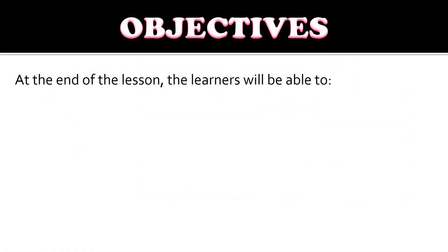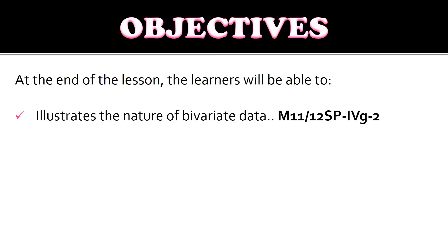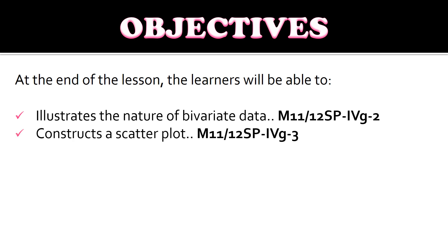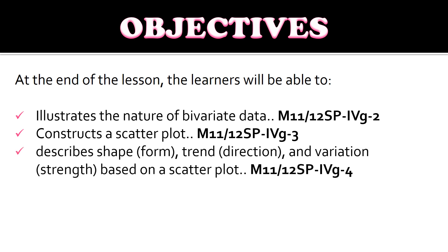For today's objectives, at the end of the lesson the learners will be able to illustrate the nature of bivariate data, construct a scatterplot, and describe shape, trend, and variation based on a scatterplot.